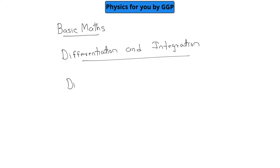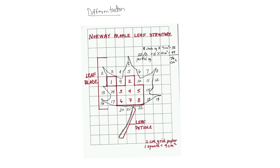The first part we will discuss is differentiation. If I directly start explaining differentiation of some mathematical functions, you will not be able to understand what we are doing. So I will take a physical example — one that everyone might have studied in 6th or 7th class when you first started learning about the area of an irregular shape.